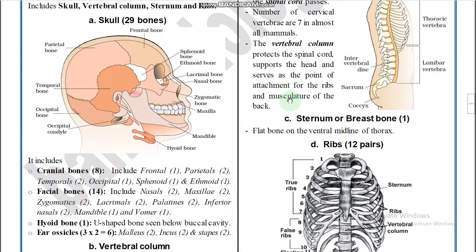The function of the vertebral column: it protects the spinal cord and supports the head, and serves as the point of attachment for the ribs and the musculature of the back.